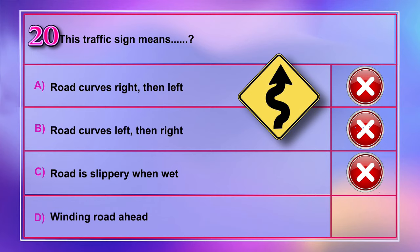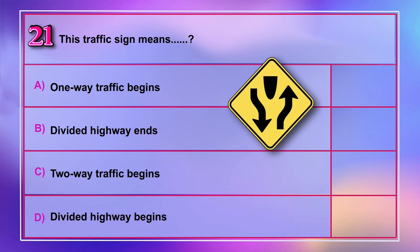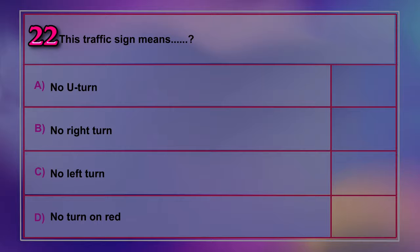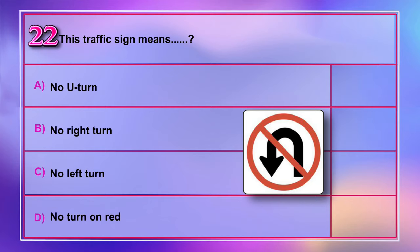Question number 21: This traffic sign means A) one-way traffic begins, B) divided highway ends, C) two-way traffic begins, D) divided highway begins. Correct answer is D: divided highway begins.